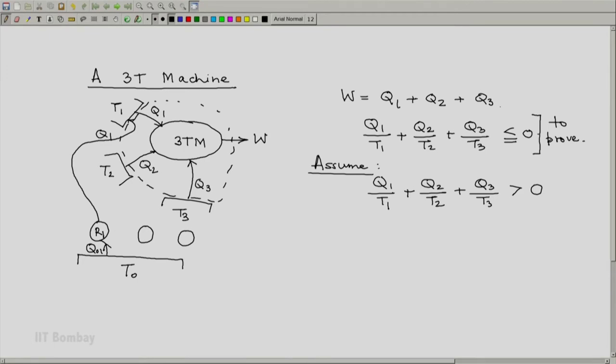Similarly, machine R2 absorbs Q02 from the reservoir at T0 and provides exactly Q2 to the reservoir at T2, producing work W02. The third machine absorbs heat Q03 and provides exactly Q3 to the reservoir at T3. This is also a reversible machine producing work W03.